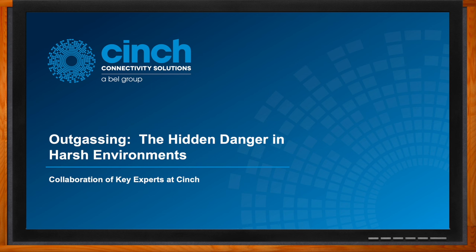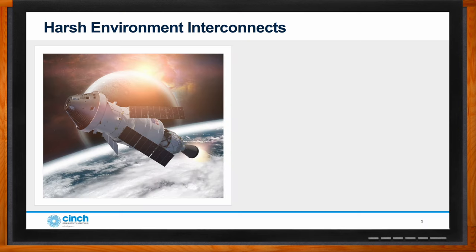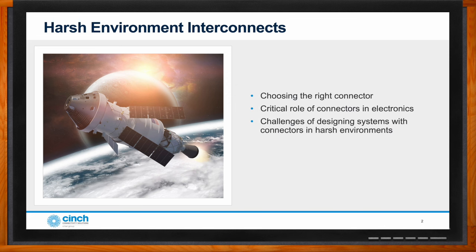We're talking about outgassing today — a hidden danger in harsh environments. Before we dig into the solutions, what kind of design considerations do we need to keep in mind when it comes to interconnects for these kinds of environments? There's a lot of opportunity for design engineers to select the right interconnects for their space program, whether they're vehicles, satellites, or other systems going into outer space. They're really looking for a product that is highly reliable and can work in harsh environments — field proven in space applications.